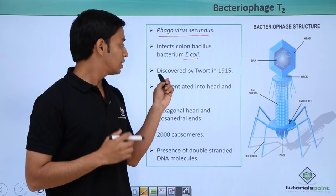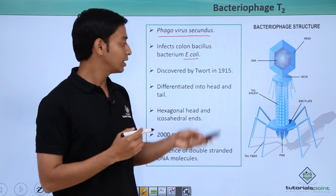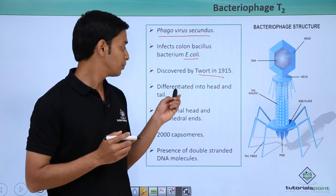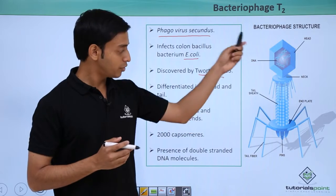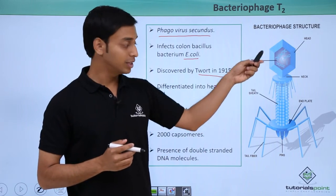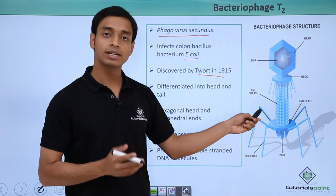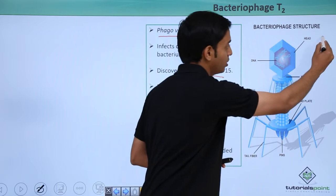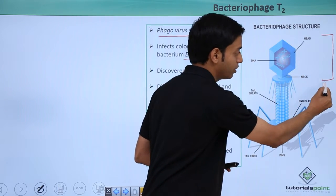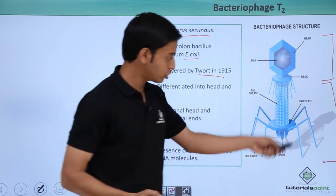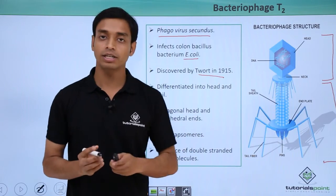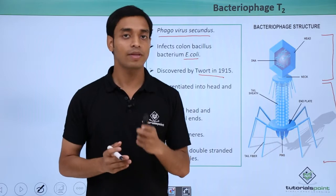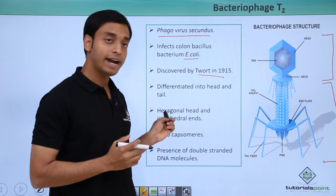These viruses were discovered by a scientist known as Tour in 1915. The typical structure of the virus is differentiated into two major parts: the first is the head region, and the rest of the portion is considered the tail region. So it is composed of two parts — the head and the tail region.